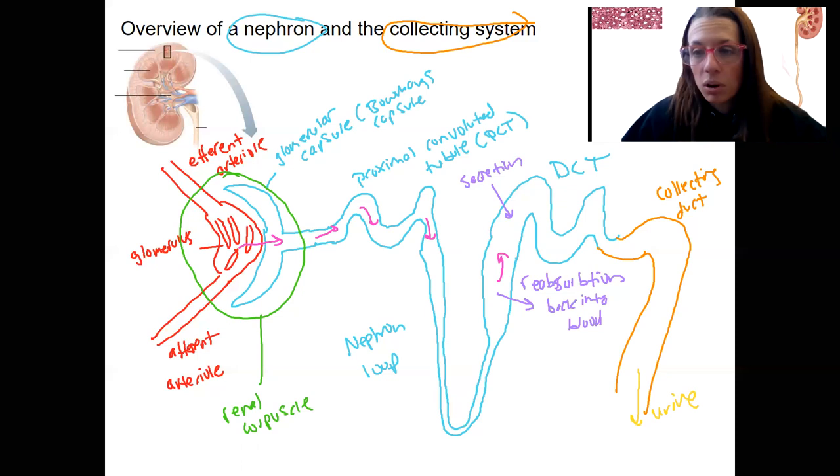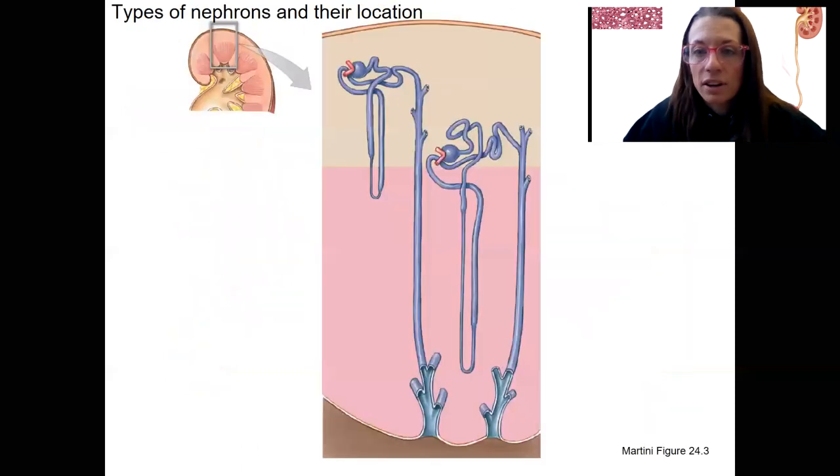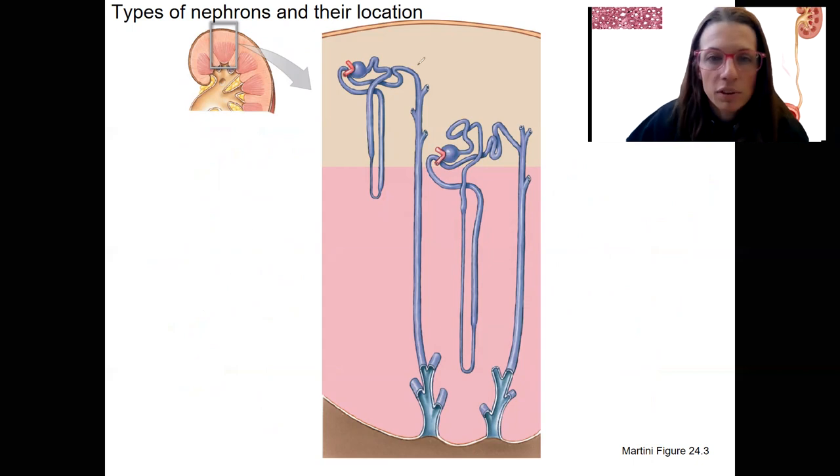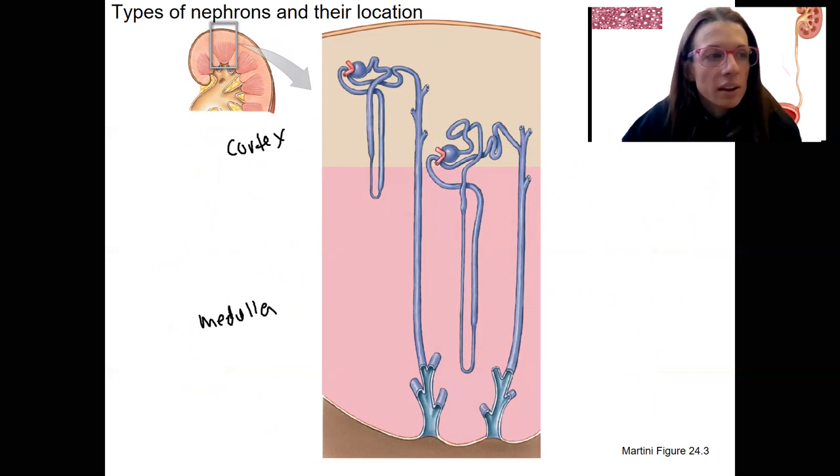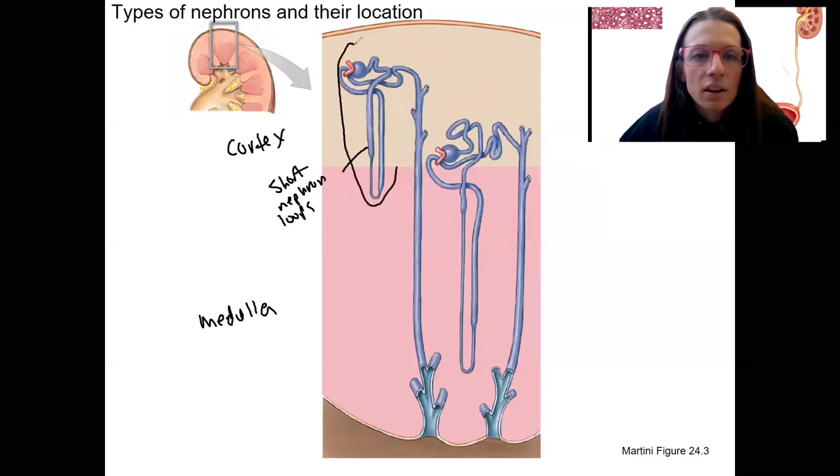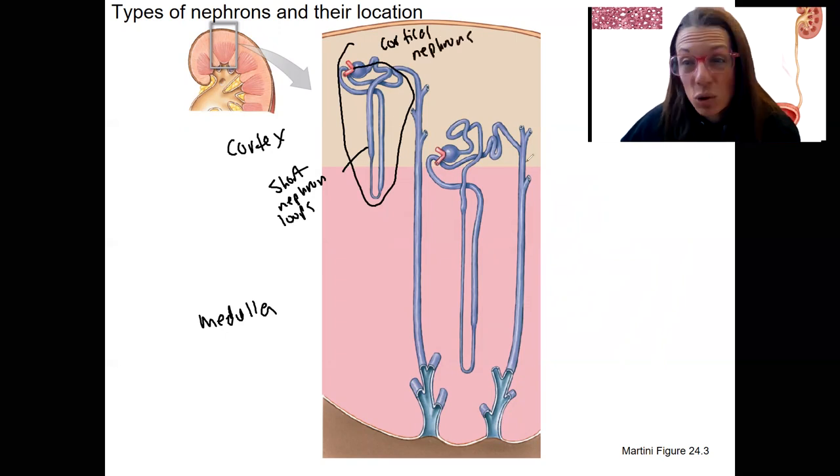Of course, there is more than one type of nephron. And those differ depending on how far down the loops dip into the medulla. So in this image here, we've got the cortex and the medulla of the kidney. And then we've got nephron loops that are short. So these nephrons would be called cortical nephrons because they're mostly in the cortex.